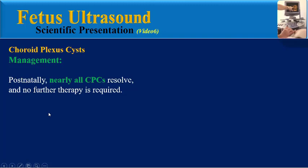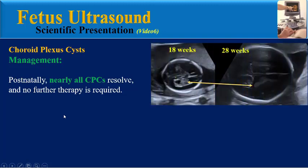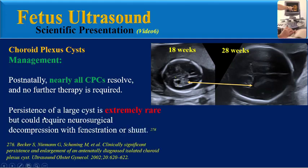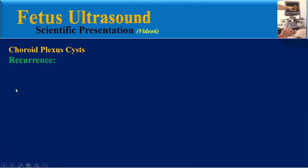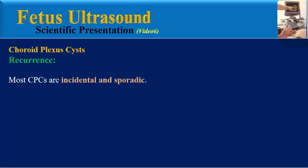Postnatally, nearly all choroid plexus cysts resolve and no further therapy is required. Persistence of a large cyst is extremely rare but could require neurosurgical decompression. Most choroid plexus cysts are incidental and sporadic and there is no risk for recurrence.